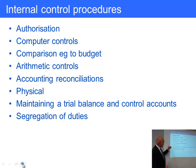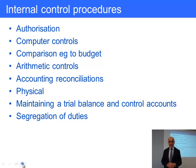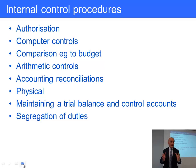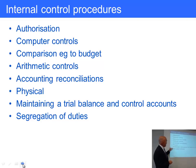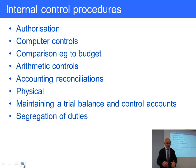Segregation of duties is almost required in large organisations with enough people to break up transactions. It's more difficult in small organisations with maybe only one bookkeeper or a couple of people. In small organisations, instead of full segregation, the managing director or chief accountant should keep a very watchful eye on everything going on.